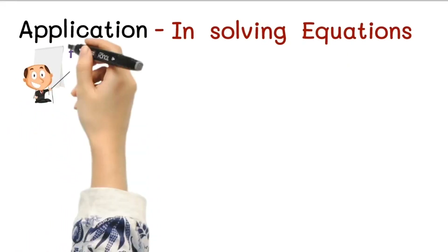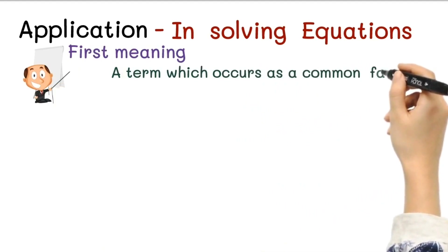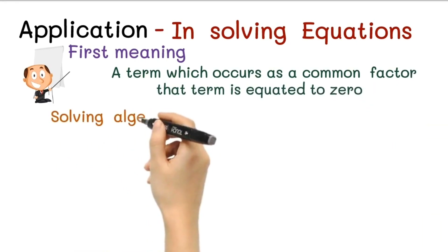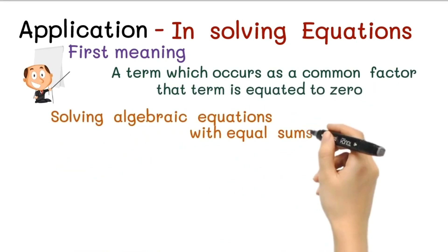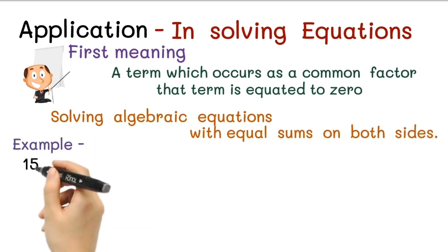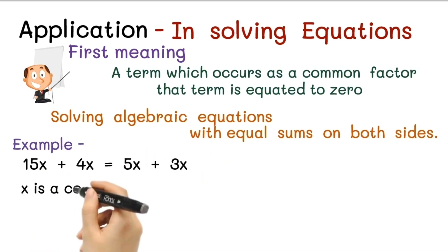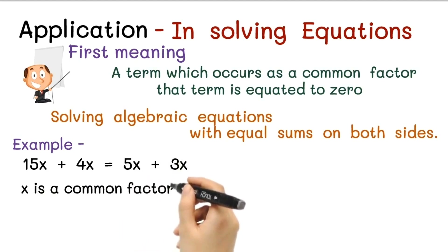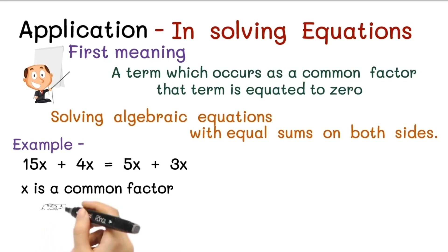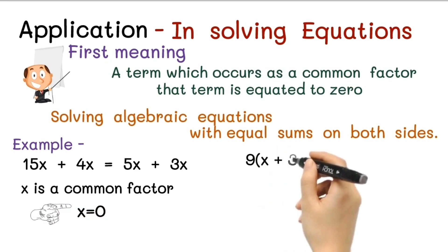The first meaning is: a term which occurs as a common factor in all the terms is equated to zero. This is an effective approach for solving algebraic equations with equal sums on both sides. For example: 15x + 4x = 5x + 3x. Here, x is a common factor on both sides, so we can equate x with 0. That is the solution for this kind of equation.